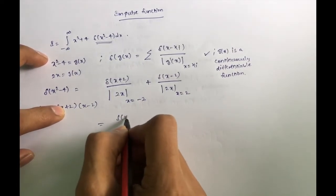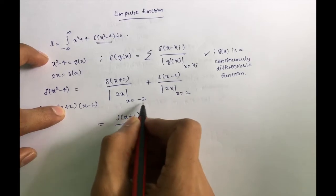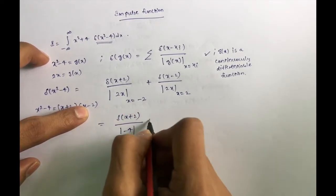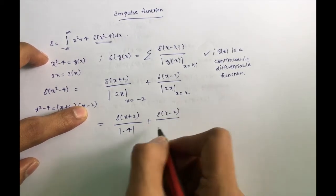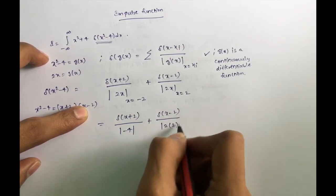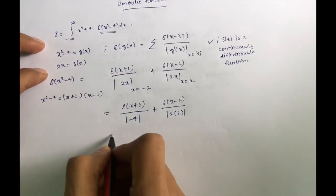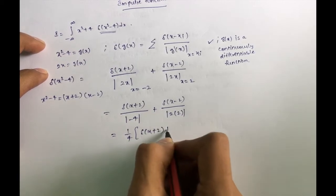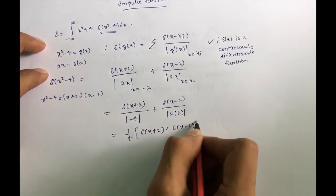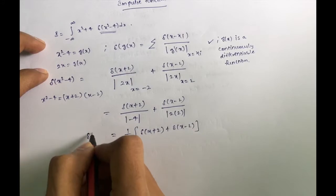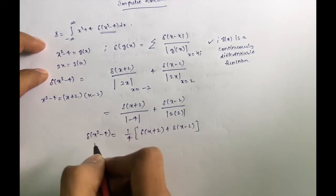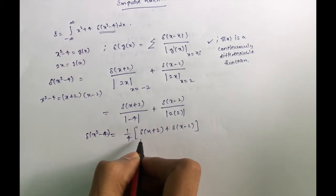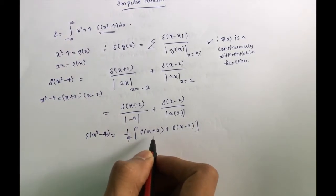For δ(x + 2), putting x = -2 we get |2 × (-2)| = 4, and for δ(x - 2) we get |2 × 2| = 4. Don't forget the modulus value. So we get δ(x² - 4) = (1/4) · δ(x + 2) + (1/4) · δ(x - 2), which equals 0.25 · [δ(x + 2) + δ(x - 2)].